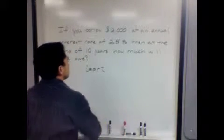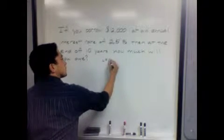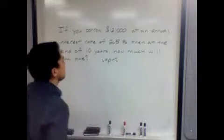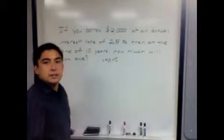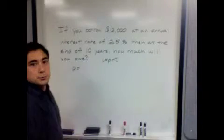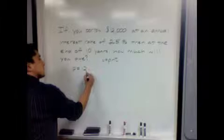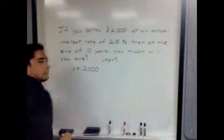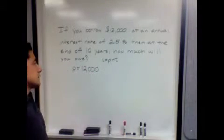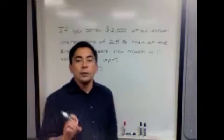I'm going to write it up here: I = PRT. We don't know what the interest is, we're trying to figure that out. We know that P in this case, your principal, the initial amount borrowed, is 12,000.